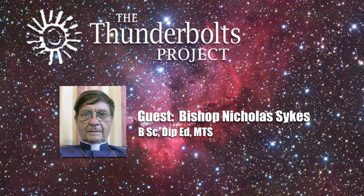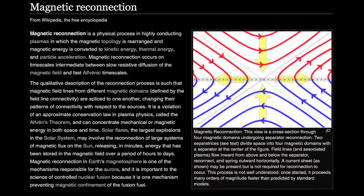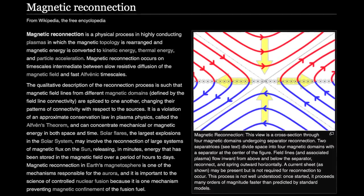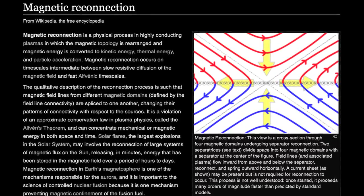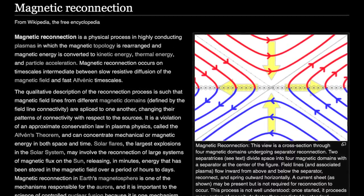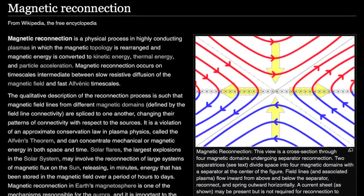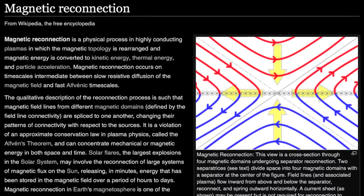It is extraordinary, to say the least, that such an idea has gained so much support in the halls of academia. Electrical engineers and plasma cosmologists have been known to say that magnetic reconnection is one of the stupidest theoretical ideas that researchers have ever derived from the mistaken belief that there are no significant electric currents in space.